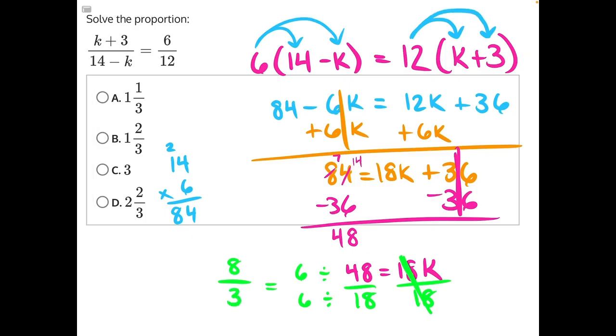There are no more common factors between our numerator and denominator, so we can turn this into a mixed fraction and we will have our answer. 3 can go into 8 two times.